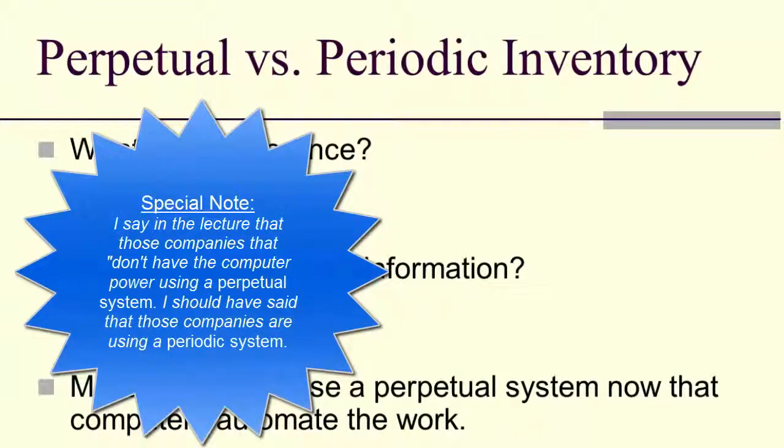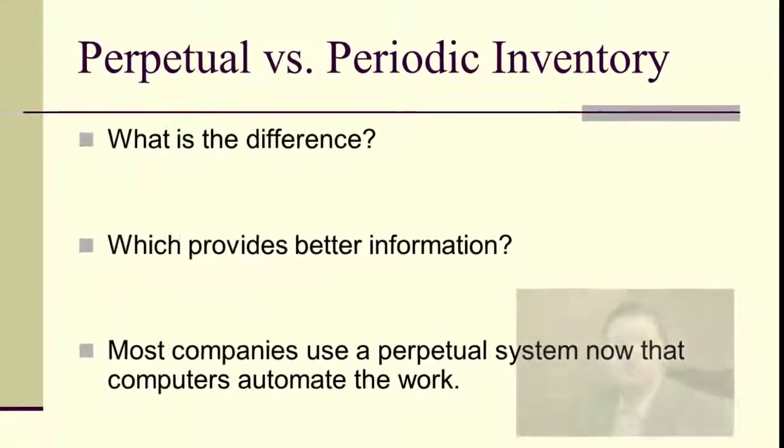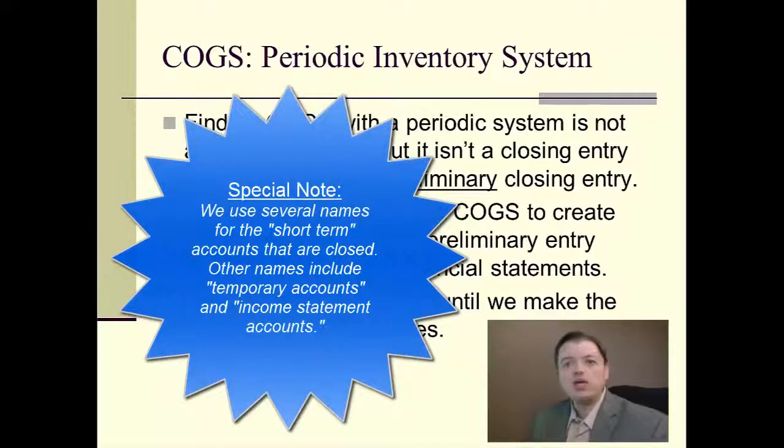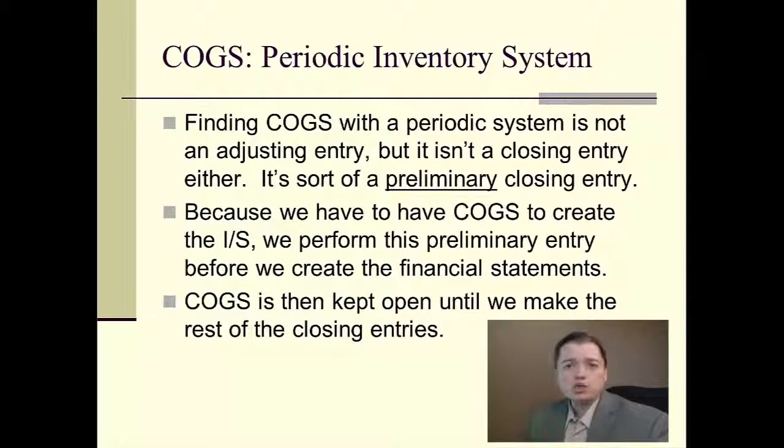But for those companies that don't use perpetual, we have to do not really a closing entry. It's kind of a pseudo closing entry. A closing entry is where we close all of our short-term accounts back into retained earnings and back into equity. In a periodic system, though, before we can even do a financial statement, we have to know what cost of goods sold is. Now since most companies do use a perpetual system, it's not as common anymore to have to go through this process before you do your financial statements. But we still need to know it for two reasons. One, there are still those smaller companies out there that are using a periodic system. Number two, we use a lot of shortcuts that are based on the equation that we're about to learn.